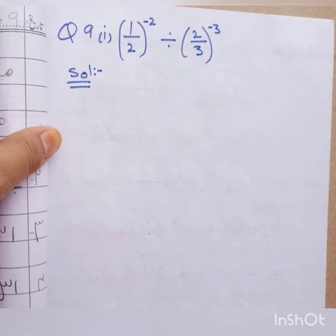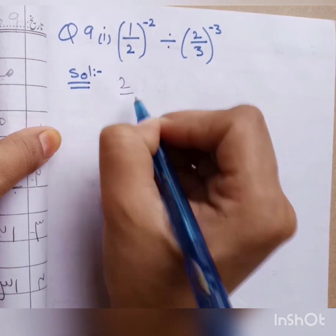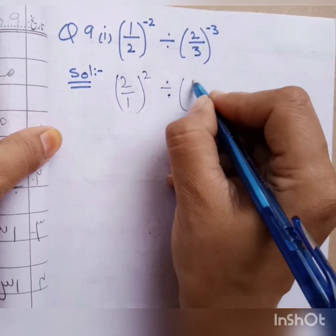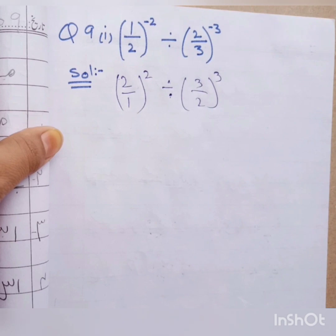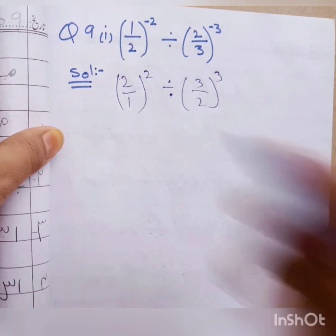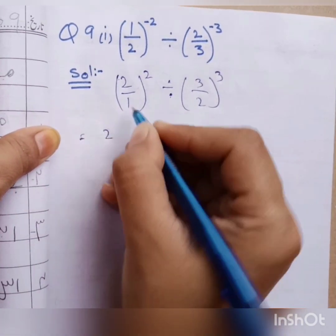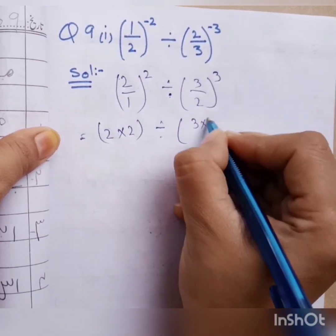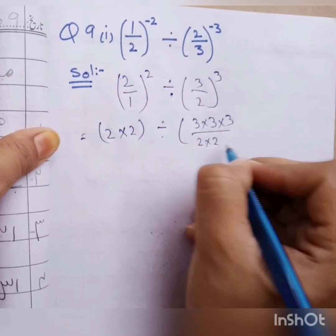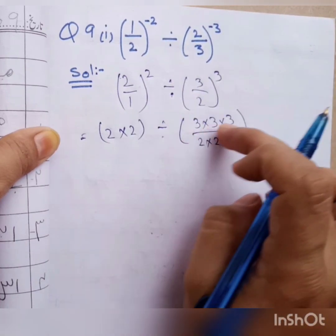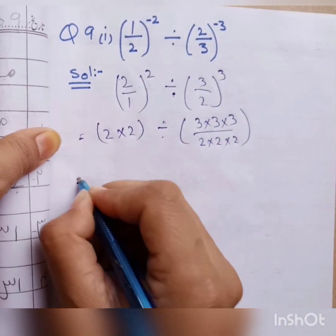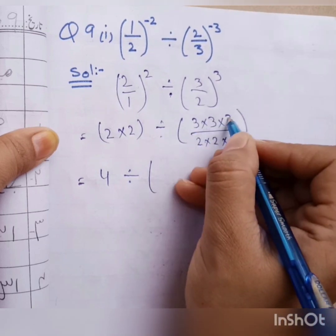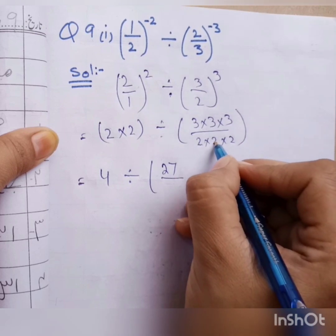In the first step, we will make our power positive. If we focus on the positive power, we will open the squares. We will open the powers. It means we write: 3 multiplied by 3 multiplied by 3 and 2 multiplied by 2 multiplied by 2 — three times — and power 2: 2 multiplied by 2. Calculating: 3×3=9, 9×3=27, and 2×2=4, 4×2=8.